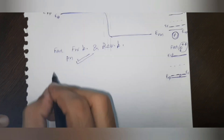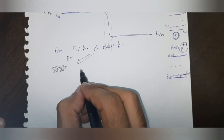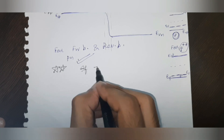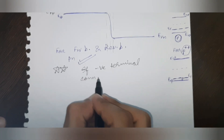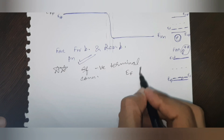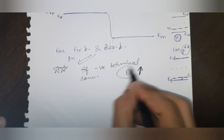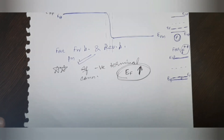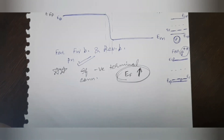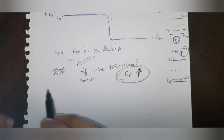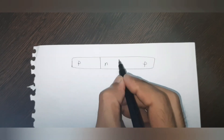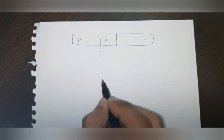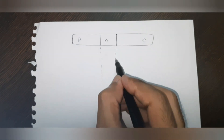Quick recap: we have completed the forward bias and reverse bias cases of the PN junction, and the key hack is that if the negative terminal is connected to a side, that side's Fermi energy level will go up. Having covered these fundamentals, it will be much easier to understand the energy band diagrams for bipolar junction transistors.